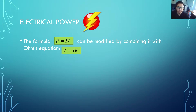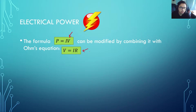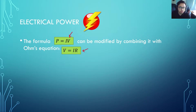P equals IV is our formula for electrical power. We can combine this with V equals IR, which is Ohm's law for resistance, to derive a new formula. We'll use the substitution method — call P equals IV equation 1 and V equals IR equation 2.